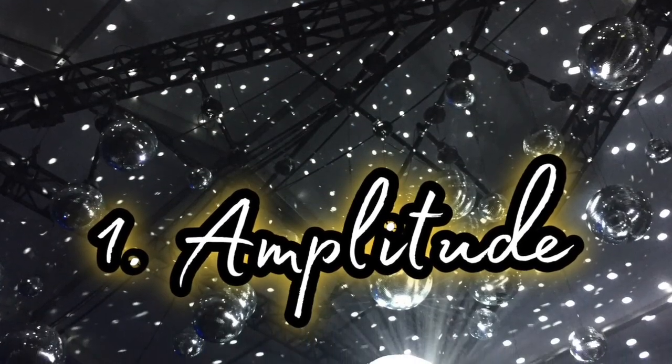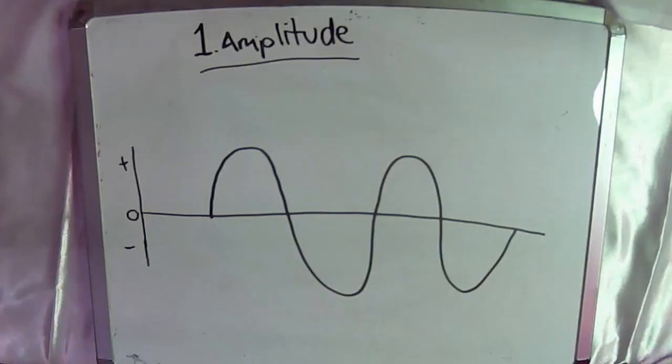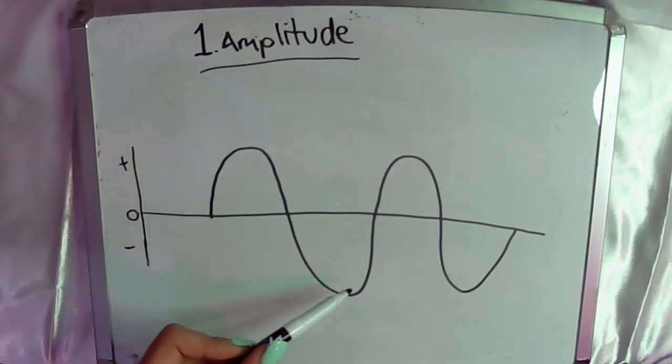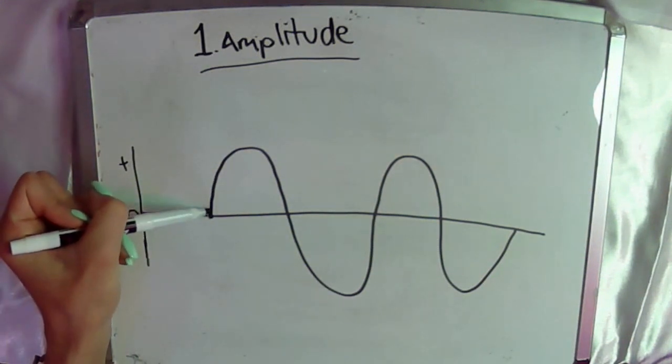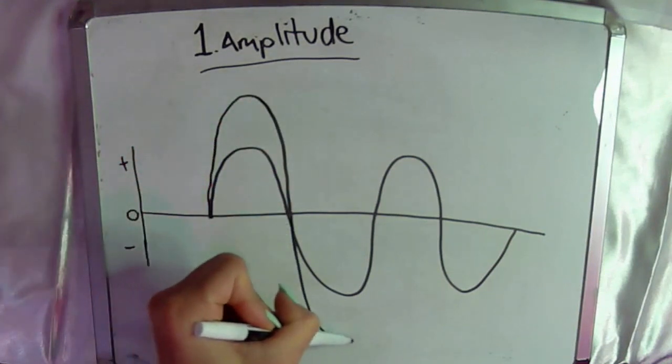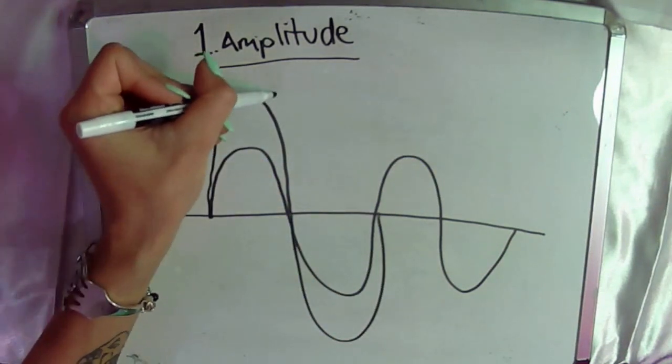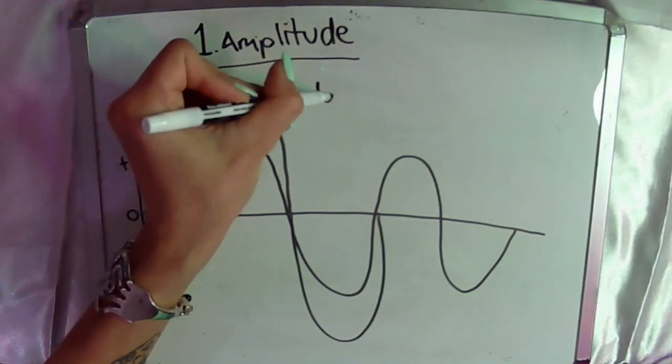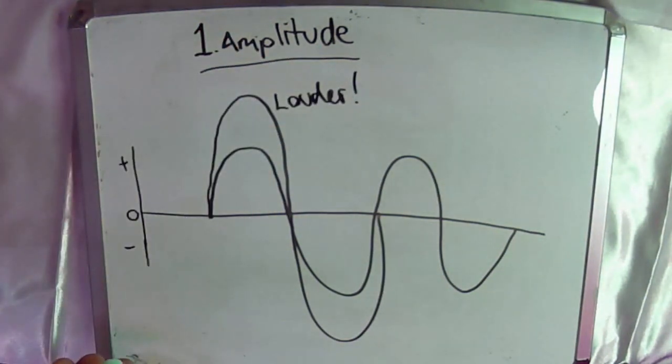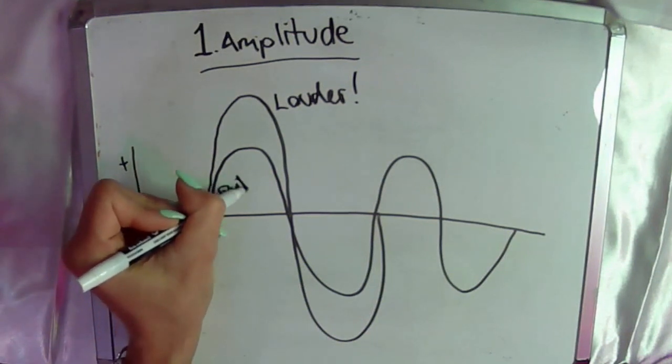The first and easiest to understand is amplitude. Amplitude is determined by the intensity of the pressure, or the amount of air pressure being created by our sound event. It's indicated on our waveform graph by the distance above and below the center line. The greater the pressure displacement, the higher the waveform on the graph. You can probably already guess that this determines the perceived loudness — more pressure means more of an impact on our eardrums, sounds louder; less pressure, less of an impact, quieter. Amplitude is measured in decibels.